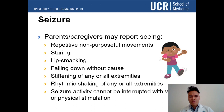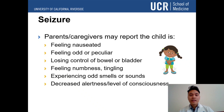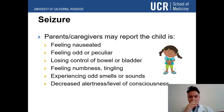What do you see when you see a seizure? Parents or caregivers may report seeing repetitive, non-purposeful movements, staring, lip smacking, or falling down without reason. The child may stiffen or start shaking. Seizure activity usually cannot be interrupted with verbal or physical stimulation. The child may feel nauseated, lose control of their bowel or bladder, feel numb or tingling, smell or hear something weird, or have decreased alertness and level of consciousness.